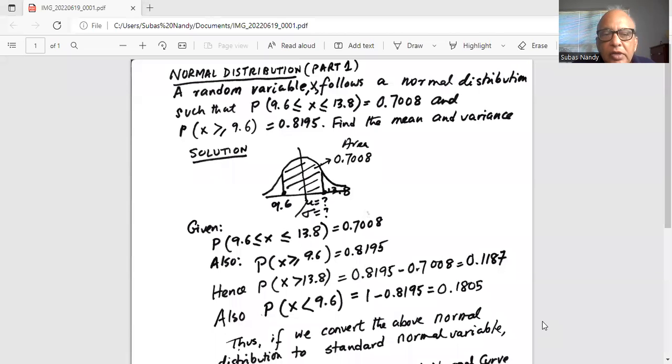Normal distribution. A random variable X follows a normal distribution such that P(9.6 ≤ X ≤ 13.8) = 0.7008 and P(X ≥ 9.6) = 0.8195. Find the mean and variance of the normal random variable X.